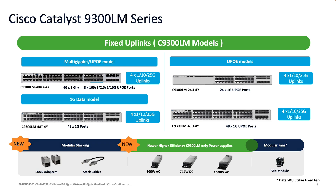Looking at the different variants available in the 9300 LM family: it comprises four platforms or four SKUs. One is a multi-gig UPOE model capable of 40x1G as well as 8x multi-gig 10K. We also have two UPOE models — 24-port and 48-port — capable of 24x1G and 48x1G respectively. For use cases requiring data connectivity, there is also a 48-port data variant capable of 48x1G.